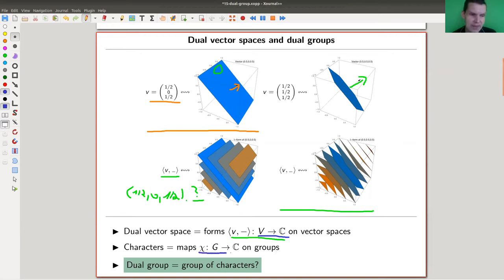And as we have learned in the previous videos, we also have maps that end in the complex numbers, and they start from groups, and they're called characters. So maybe the correct definition here of a dual group should be like the group of characters, right? So that's a question mark for now.